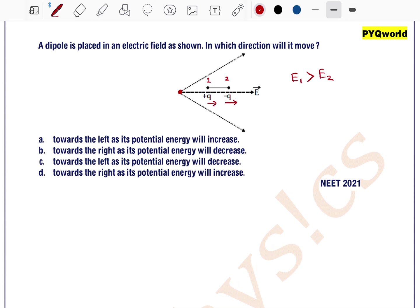The positive Q charge is placed inside electric field E1 and the negative charge is placed inside electric field E2. As we know, positive charge always moves in the direction of electric field, so the force acting on it is F1.